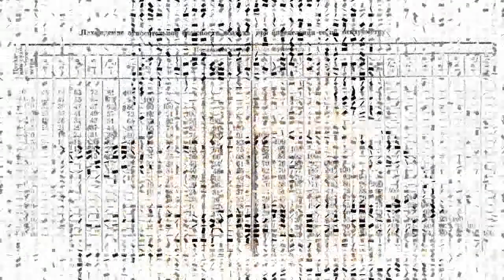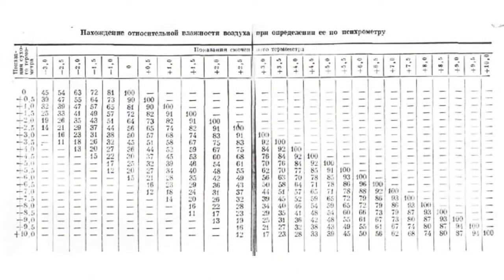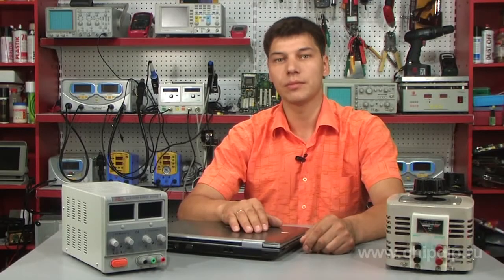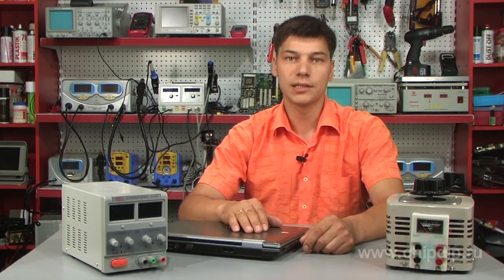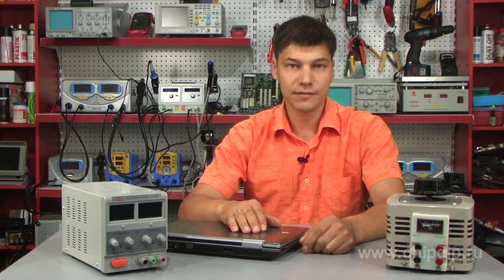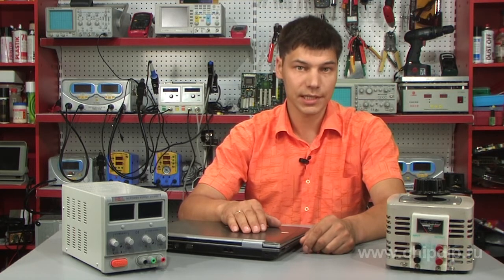The dependence can be presented in the form of a calibration table on the device's case. However, there is a modern method of presenting the dependence in the form of an equation, where the value is then calculated on a computer or with the help of a built-in microcontroller.